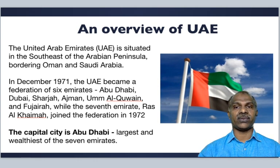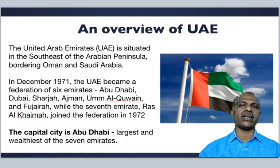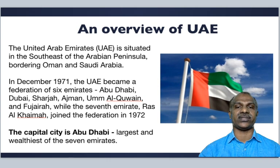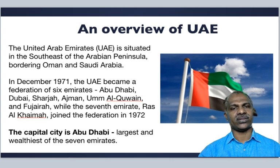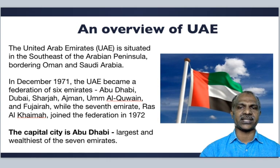An overview about the UAE. The United Arab Emirates is situated in the southeast of Arabian Peninsula, bordering Oman and Saudi Arabia. In December 1971, the UAE became a federation of six Emirates: Abu Dhabi, Dubai, Sharjah, Ajman, Ummalkain, and Fujairah. The seventh Emirate, Ras al-Khaimah, joined the federation in 1972.